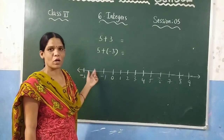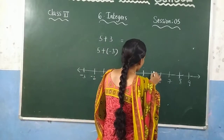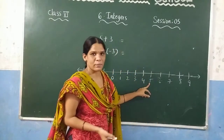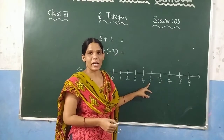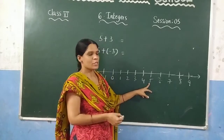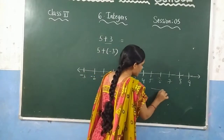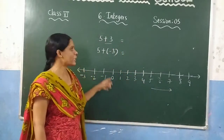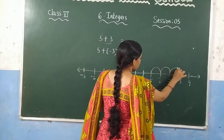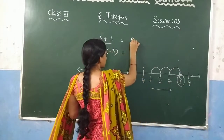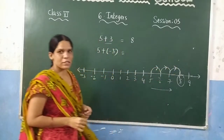First, check what the first number is — it is 5, so go to the number 5. Then check what you are adding: if you are adding a positive integer, go to the right side; if you are adding a negative integer, go to the left side. Here we are adding a positive integer, so go right 3 steps: 1, 2, 3. The answer is 8, and we draw the arrow in that direction.